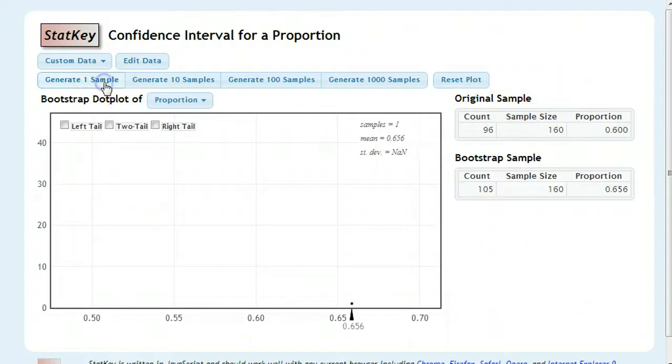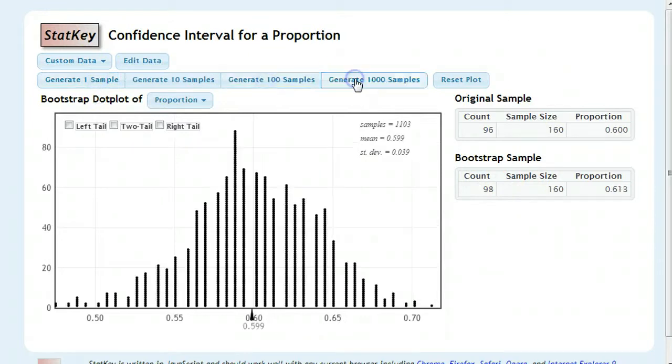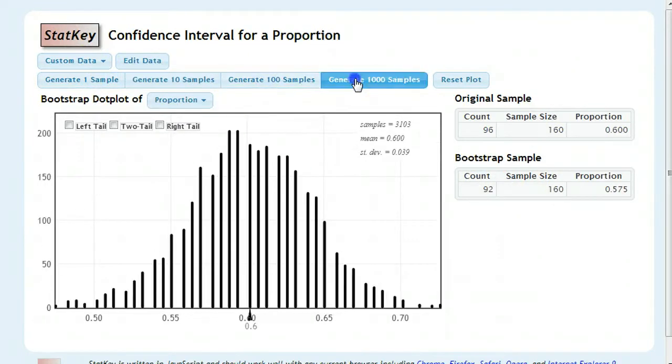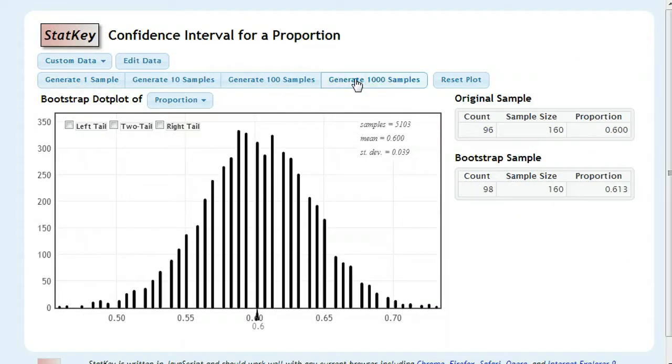If we go ahead and generate our samples, it's going to do the same thing before, where it repicks from that copy and pasted sample to form our new sample. And we generate 100, generate 1,000, and you see the same basic familiar pattern that we saw before.